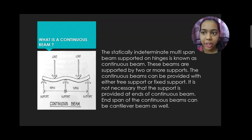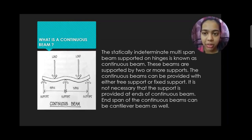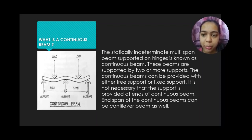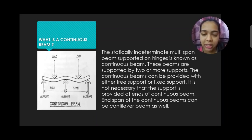What is a Continuous Beam? The statically indeterminate multi-span beam supported on hinges is known as a Continuous Beam. These beams are supported by two or more supports. The Continuous Beams can be provided with either free support or fixed support. It is not necessary that the support is provided at the ends of continuous beams. The end span of the continuous beams can be a cantilever beam as well.